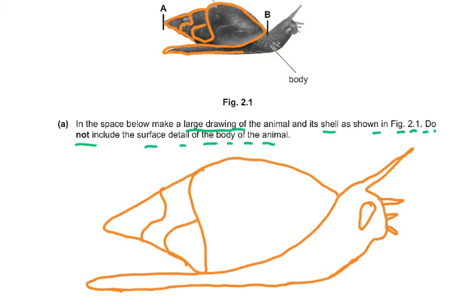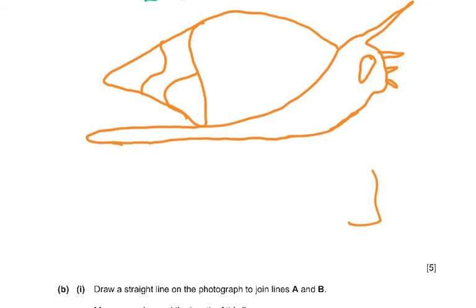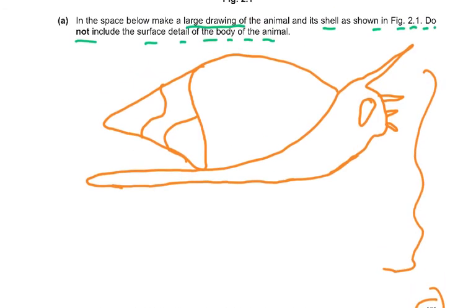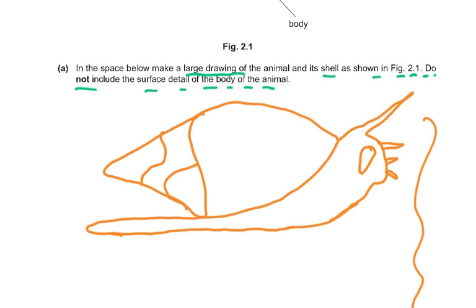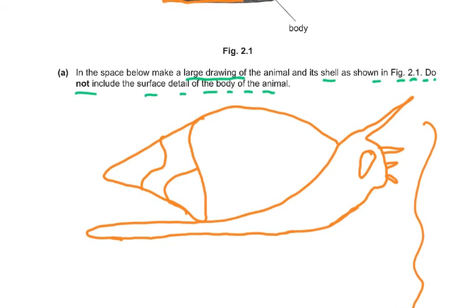Now it doesn't look so good, but I think it will probably get me four out of five marks. There are five marks for it, as you can see here. This is for five marks. Number one: clear and clean lines are drawn with a sharp pencil and no shading.